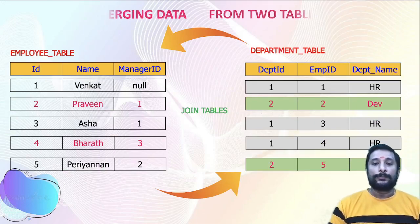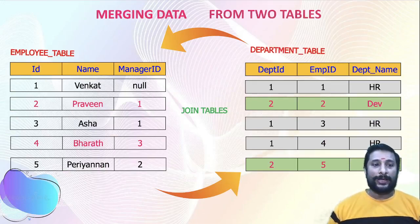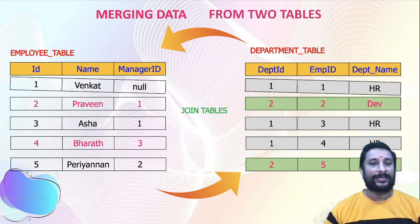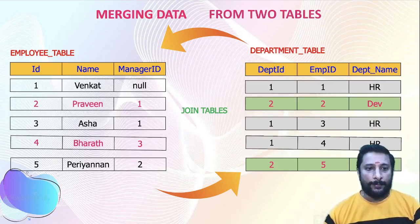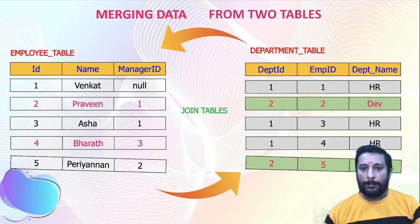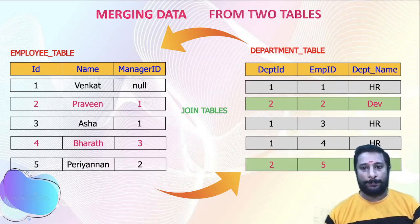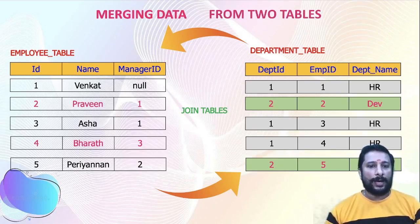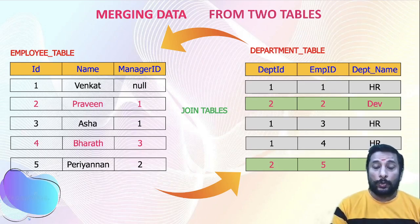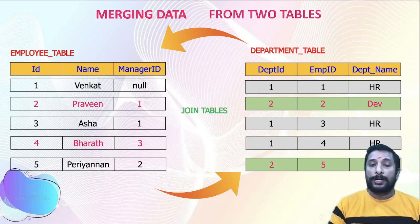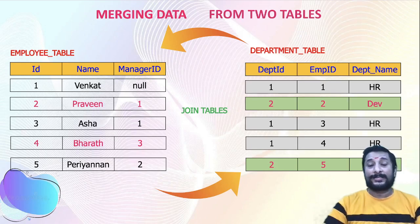As I mentioned, I have two tables — employee and department. By merging these tables I'm able to find which department Venkat, Praveen, Asha, and Perian each belong to. We are able to join and merge two tables to get the required data.